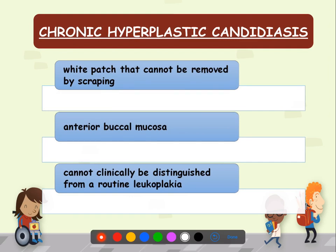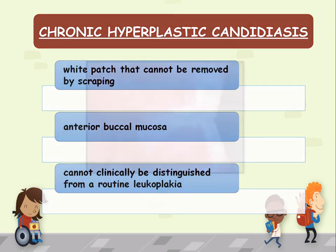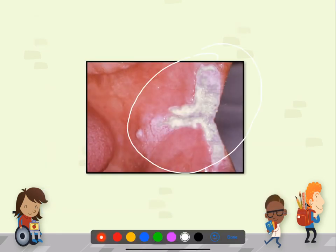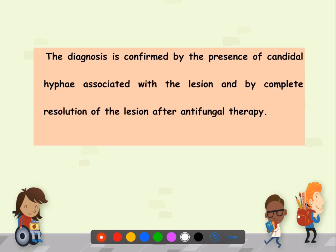Chronic hyperplastic candidiasis presents as a white patch that cannot be removed by scraping — unlike pseudomembranous candidiasis which is removed by scraping. It mostly occurs on the anterior buccal mucosa and cannot clinically be distinguished from routine leukoplakia; therefore a biopsy or smear must be taken. It has a higher tendency to turn malignant. Diagnosis is confirmed by the presence of candidal hyphae, and antifungal therapy causing complete resolution helps distinguish it from leukoplakia.